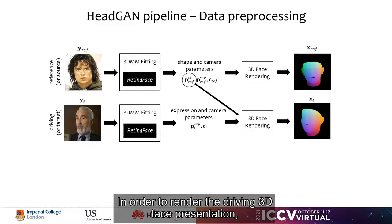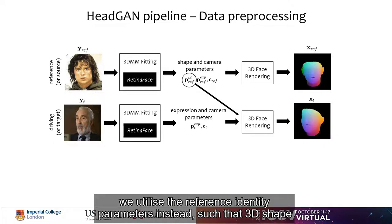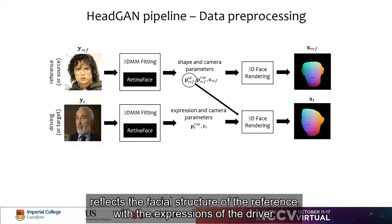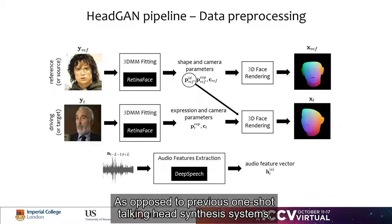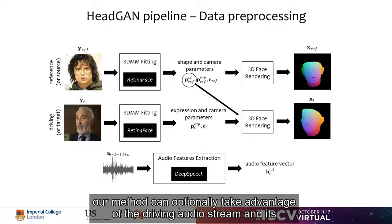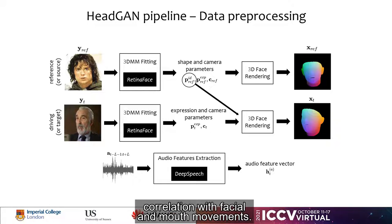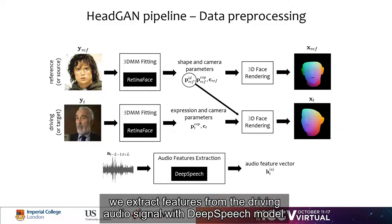Next, we render the 3D face representation from the parameters recovered from the reference image. In order to render the driving 3D face representation, we utilize the reference identity parameters instead, such that the 3D shape reflects the facial structure of the reference with the expressions of the driver. This enables us to overcome the identity preservation problem during reenactment. Our method can optionally take advantage of the driving audio stream and its correlation with facial and mouth movements. To that end, we extract features from the driving audio signal with a deep speech model.